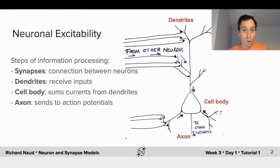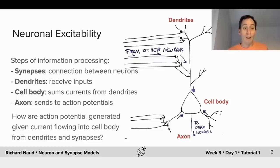So I'm going to treat the question of how is an action potential being generated, given the current flowing into the cell body from the dendrites and the synapses. And this way, I'm going to focus really on the excitability, on how and what is making the action potential.